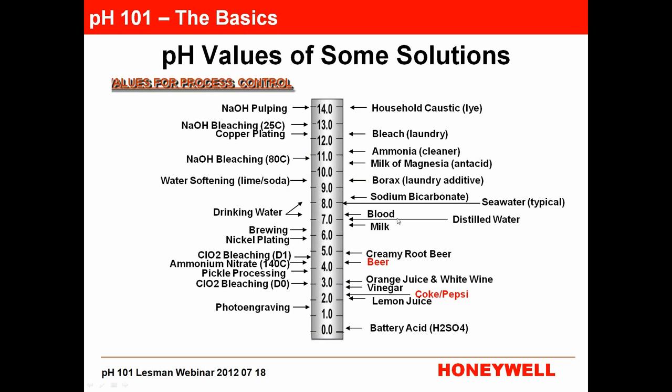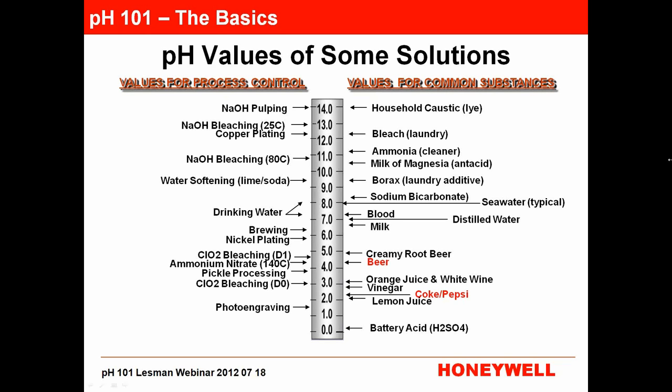Here's a list of some solutions — some for process control and some common substances. If you look at the common substances on the right-hand side, toward neutral is the pH of your blood. Your blood should be between 7.35 and 7.45. If it changes by more than a tenth of a pH, you can develop acidosis of the blood — so it's very important. Laundry bleach is a very high pH. Lemon juice is down to about 2 pH. Beer is about 4.3. Coke and Pepsi are quite a bit more acidic at 2.45.